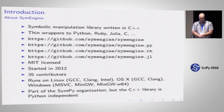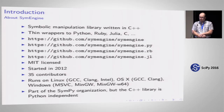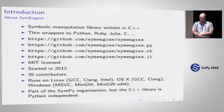It was started around 2012 and has about 35 contributors so far. It runs on Linux, OSX, and Windows, and we made sure it compiles with every compiler we could get our hands on: GCC, Clang, Intel on Linux, GCC and Apple Clang on Mac, MSVC and MinGW on Windows. It's part of the SymPy organization — we share Google Summer of Code and so on.